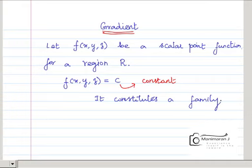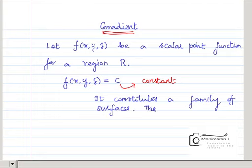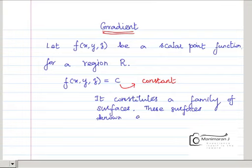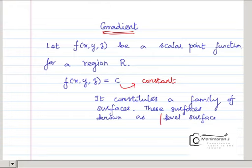These surfaces form a family of surfaces, and they are known as level surfaces. So if I have a scalar point function on region R and set it equal to some constant c, it gives us some surfaces — these surfaces are called level surfaces.